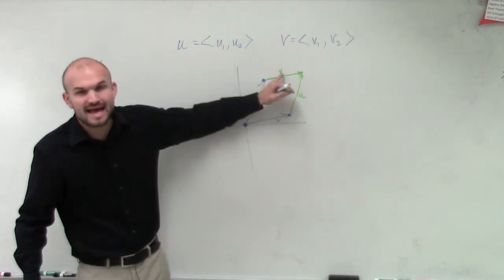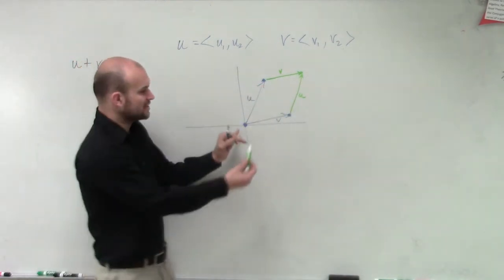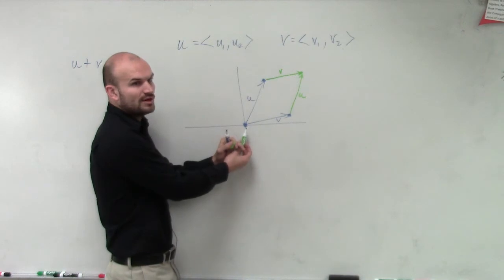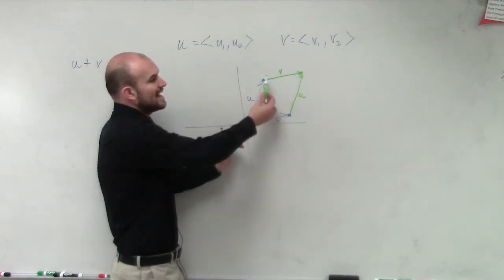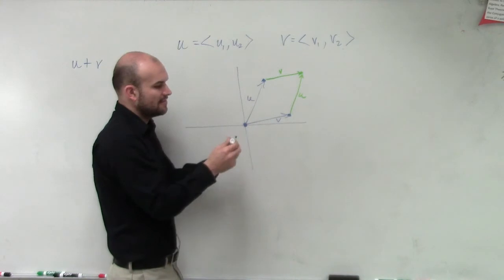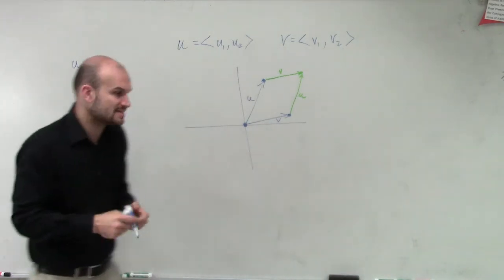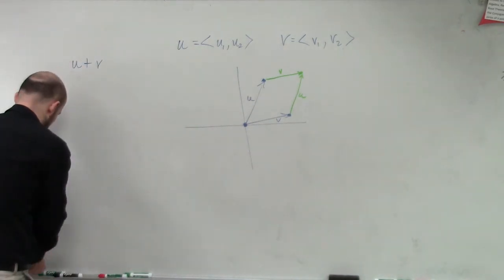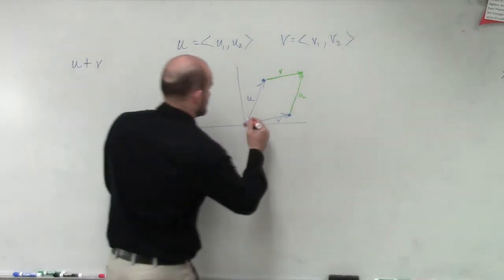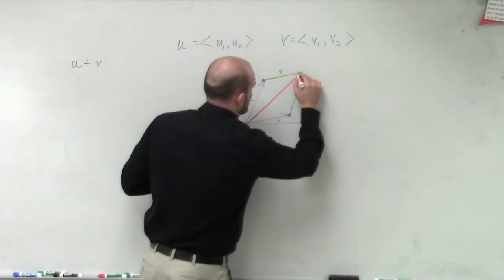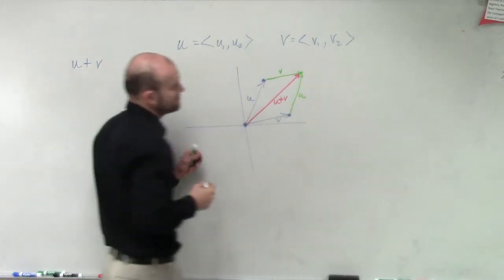So it doesn't matter if I add u to the end of v, or if I add v to the end of u. But what you're going to do is take the initial point of one vector and put it at the end of your terminal point of your other vector. Then what you'll have is a resultant vector, which is going to be u plus v.